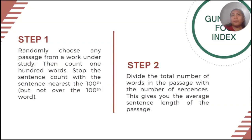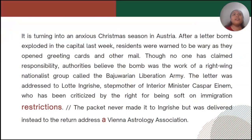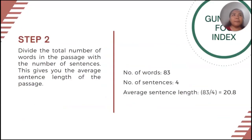Step two: divide the total number of words in the passage by the number of sentences. This will give us the average sentence length of the passage. In this example passage, the 100th word fell on the article 'a,' and our counting stopped at the word 'restrictions,' as it is the word nearest to 100. So we have 83 divided by 4, which gives us an average sentence length of 20.8 words per sentence.